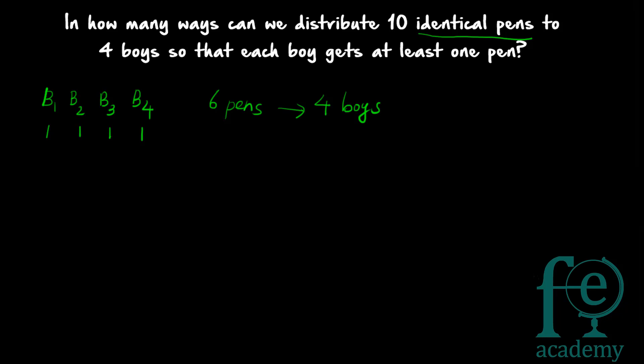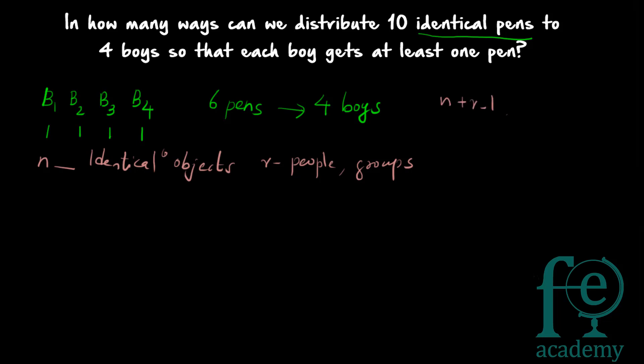The formula for the number of ways in which N identical objects can be divided among R groups or R people is: N plus R minus 1, C R minus 1. Here R is the total number of people or groups, and N is the number of identical objects. This formula gives the number of ways to distribute N identical objects to R people.